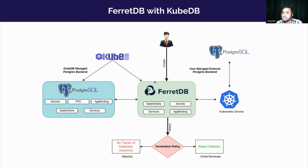If a user wants to use their own PostgreSQL pod or an existing PostgreSQL in the cluster, they can do so. They just need to provide the URI of that PostgreSQL in the FerretDB YAML file, or give the service name and namespace pointing to that PostgreSQL pod. There are two termination policy options: wipeout, which leaves no trace of database resources, and do-not-terminate, which rejects deletion and is handled by the KubeDB controller for FerretDB.